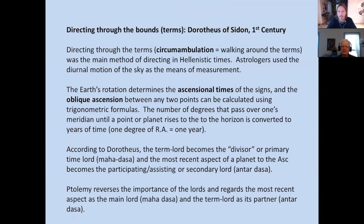Directing through the bounds: after birth, the whole chart is appearing to rotate like a clock, so that all the points below the ascendant slowly rise toward the ascendant. Each sign is divided into five terms or bounds. At certain points of life, certain planets will be governing the bounds of the signs on the ascendant. Those planets become very important time lords — or the dasha lords in the Vedic system.